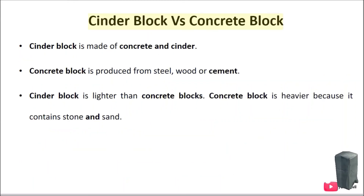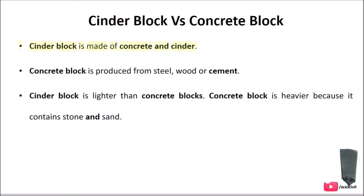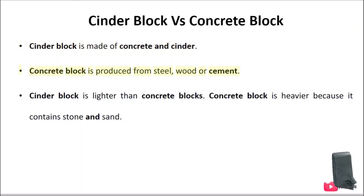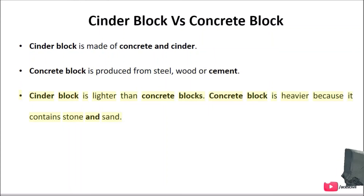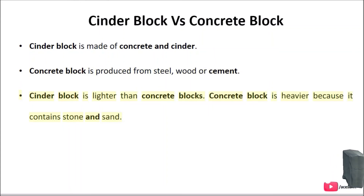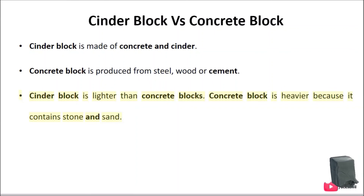Cinder block vs. Concrete block: Cinder block is made of concrete and cinder, while concrete block is produced from steel, wood, or cement. Cinder block is lighter than concrete blocks, whereas concrete block is heavier because it contains stone and sand.